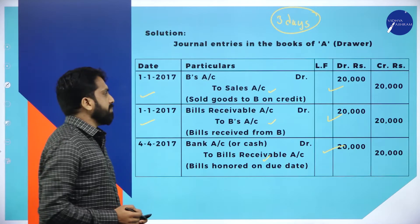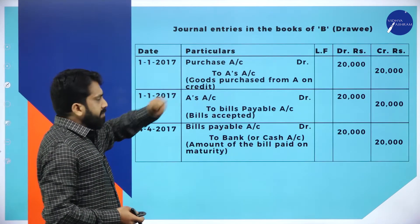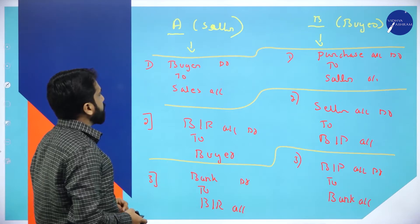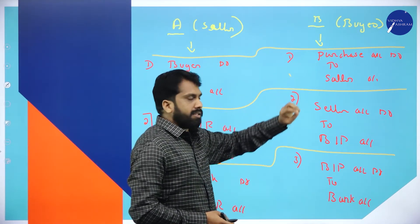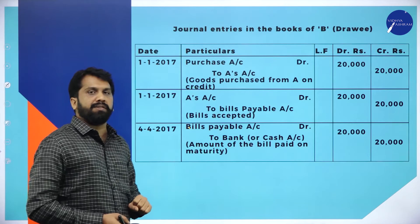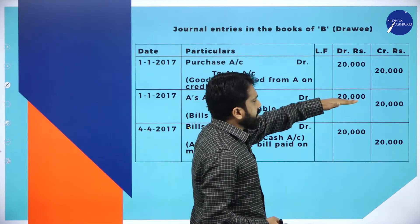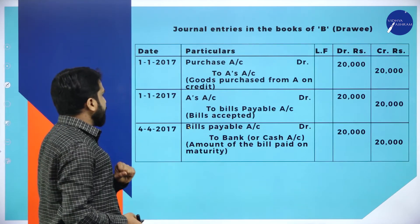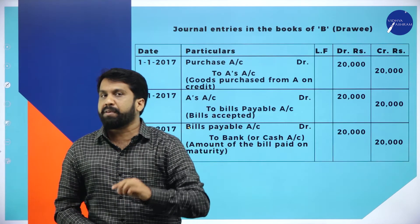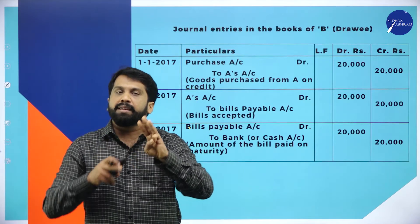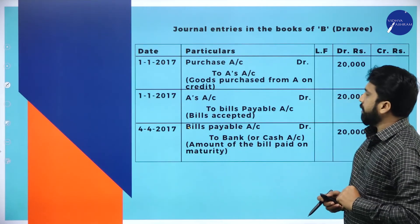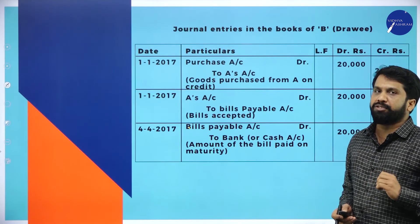Now we will go for B. Purchase account to Seller; Seller to Bills Payable; Bills Payable to Bank — same pattern followed. The amount is 20,000 for all three entries. The date for the first and second journal entries is 1st January; for the last journal entry — payment after 3 months — add 3 months plus 3 days grace period. It is done.